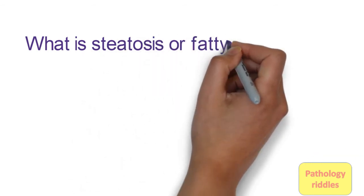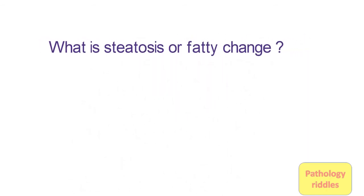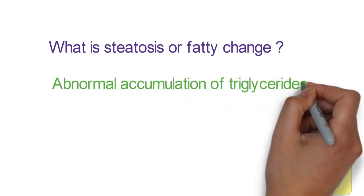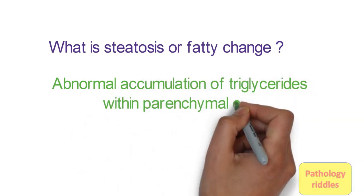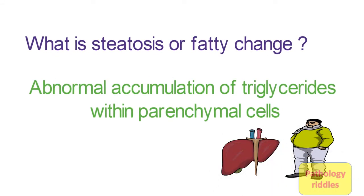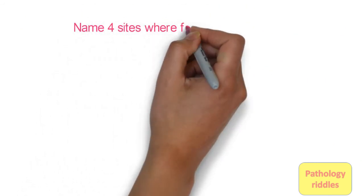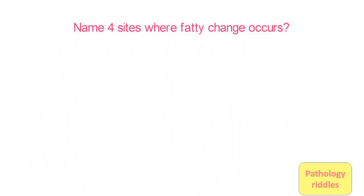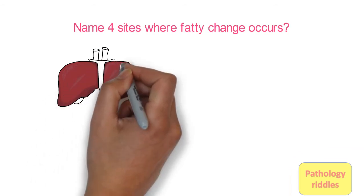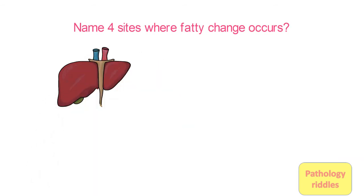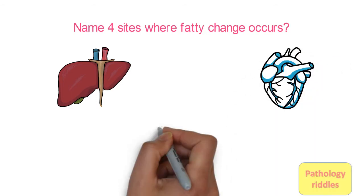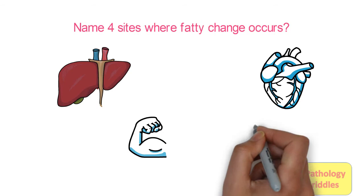The fourth question: What is steatosis or fatty change? Abnormal accumulation of triglycerides within the parenchymal cells is called steatosis or fatty change. Fifth question: Name 4 sites where fatty change occurs. Fatty change can occur mostly in the liver, as it is the organ involved in fat metabolism, but fatty change can also occur in heart, muscle, and kidney.